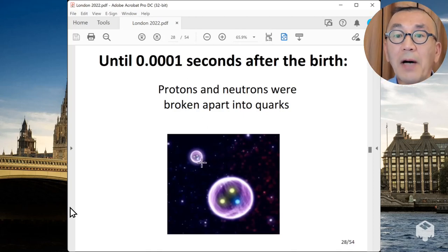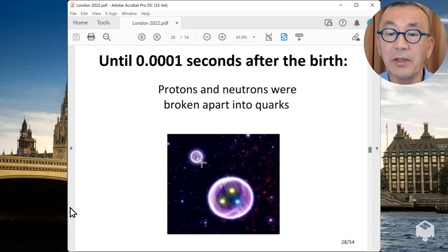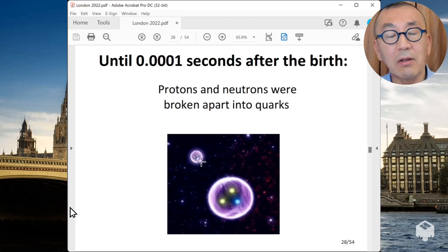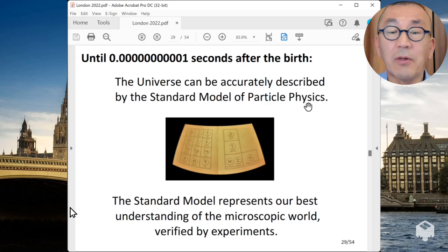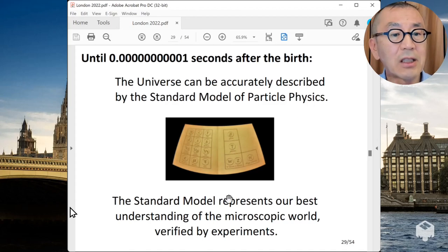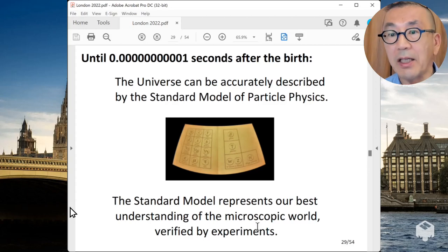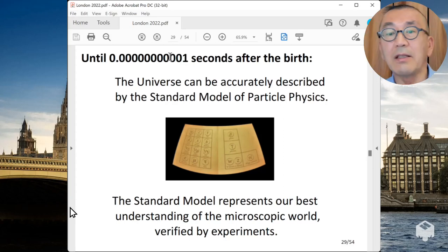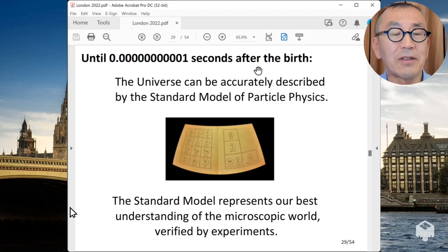We can even go back to the earlier time of the universe in scientific method, because we have what is now called the standard model of particle physics that has been verified by experiment. And this is actually the best understanding of microscopic world verified by experiment. And using this theory, we can actually describe the universe at 0.0000000000 - that's 10 zeros after the decimal places - 1 second after the birth. So we can use this theory.